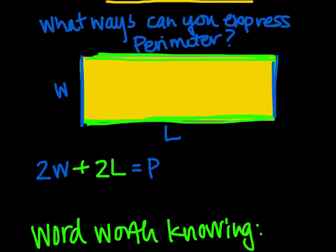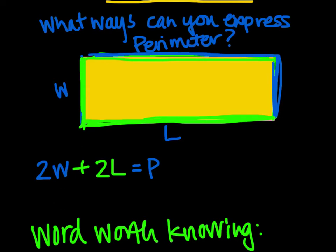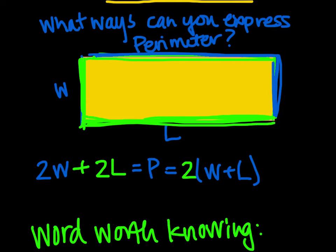There's also another way to look at it. We have a width here and a length here, and we have two of those — one length and width, and another length and width. So we can also express perimeter as 2 times (W + L): one set of sides plus another of that same set. Those are two equivalent expressions — two different ways to express perimeter.